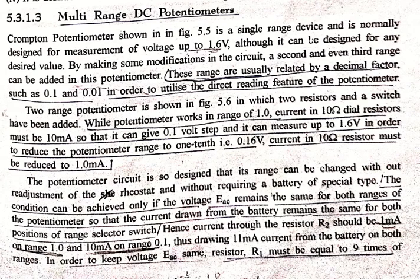For removing that limitation of measurement of voltage up to 1.6V only, a multi-range DC potentiometer device is designed by doing some modification in the circuit. So we can increase or decrease the range of the DC potentiometer.